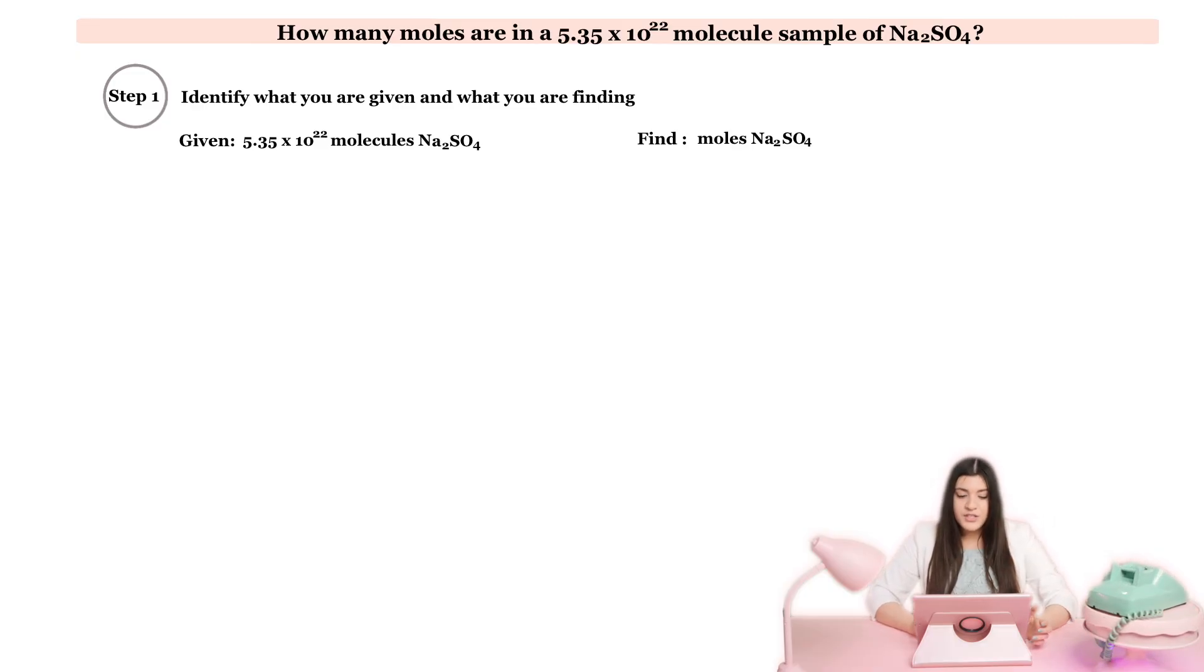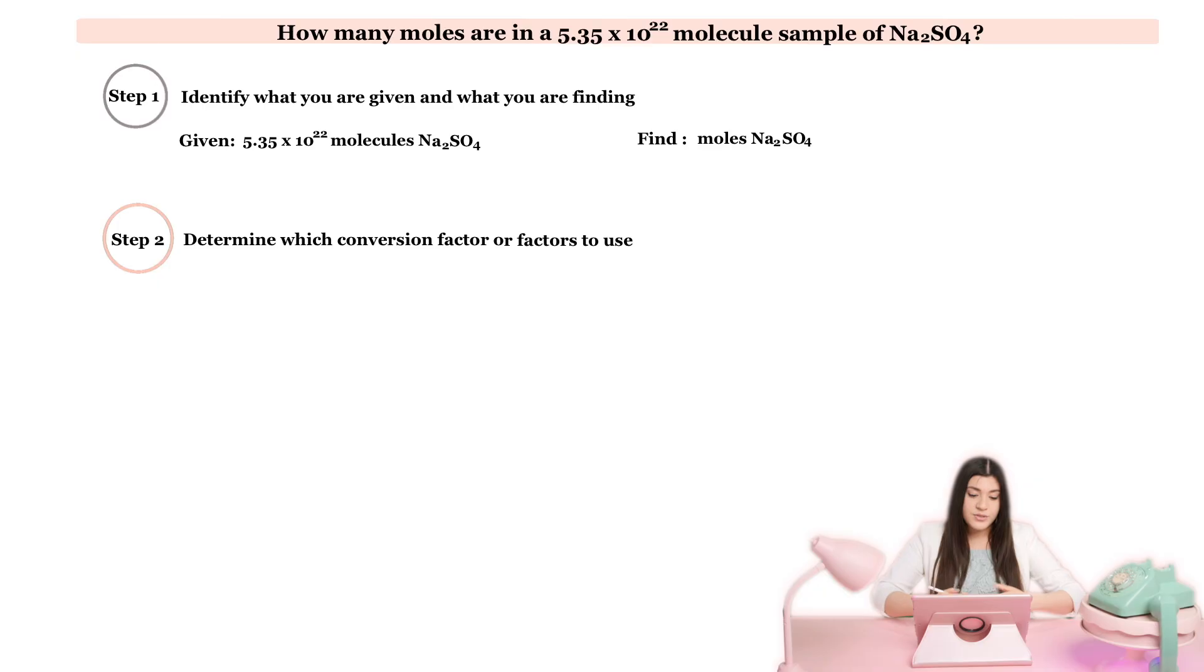So the next step is to pretty much just identify what we have to go to next. So how many conversion factors we're going to need. That's the next step and let's go over just the different types of conversion factors you will most likely see for a stoichiometry problem. For step two we said that we're going to determine which conversion factor or factors we have to use.